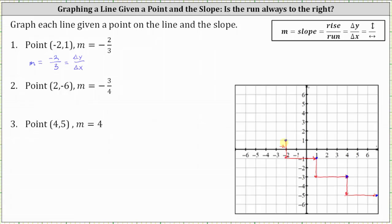Now if we wanted to find points to the left of the point at negative two comma one, we can change the form of the slope. Negative two divided by positive three is equivalent to positive two divided by negative three. In this form, the rise or change of y is positive two and the run or change of x is negative three, which means we go up two units and then left three units. Notice here the run is not to the right, it's left. This is the line passing through negative two comma one with a slope of negative two thirds.